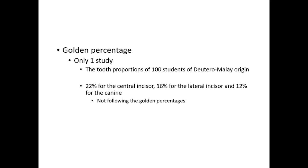Only one study that looked exclusively at the golden percentage was identified. The author investigated the tooth proportions of 100 subjects of Jutero Malay origin and found that the maxillary tooth proportions were 22% for the central incisor, 60% for the lateral incisor, and 12% for the canine. These findings did not follow the golden percentages.